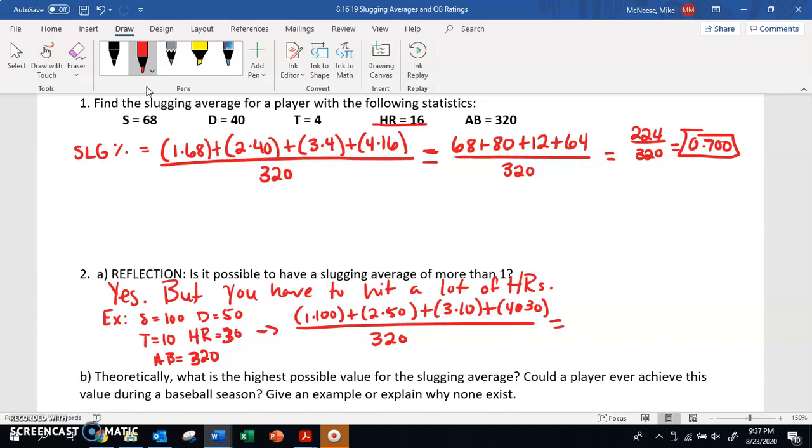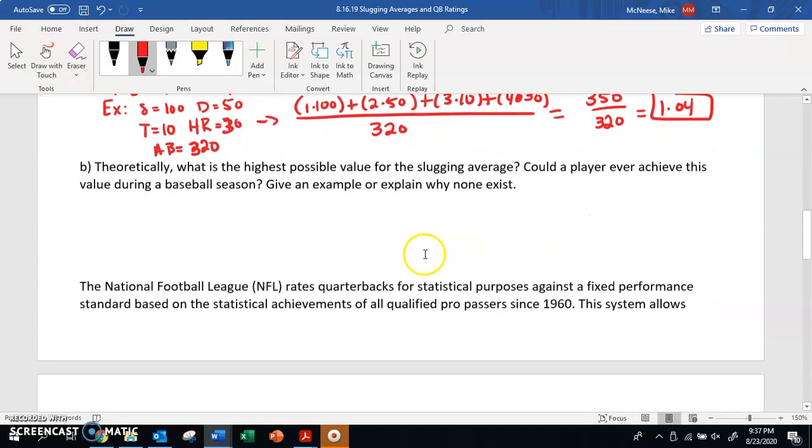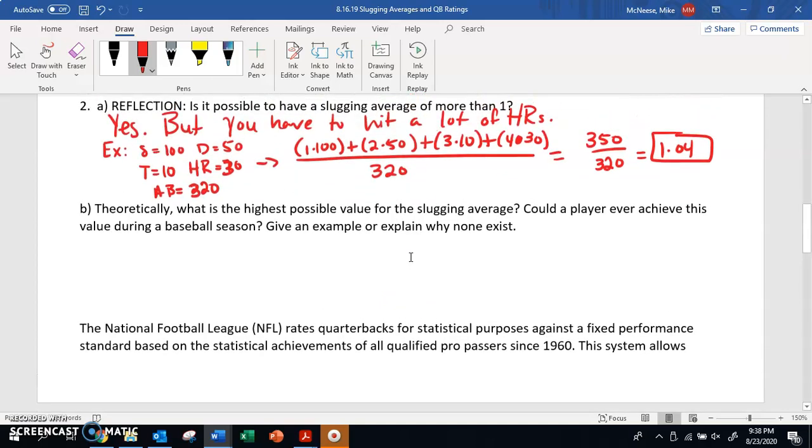If you simplify this, you should get 350 on top, all of this adds to 350, and then still just 320 on bottom, which would give you a slugging percentage of 1.04. So it is possible, but you've got to hit a lot of home runs. Theoretically, what is the highest possible value for the slugging average? Could a player ever achieve this value during a baseball season? Give an example and explain, or explain why none exists.